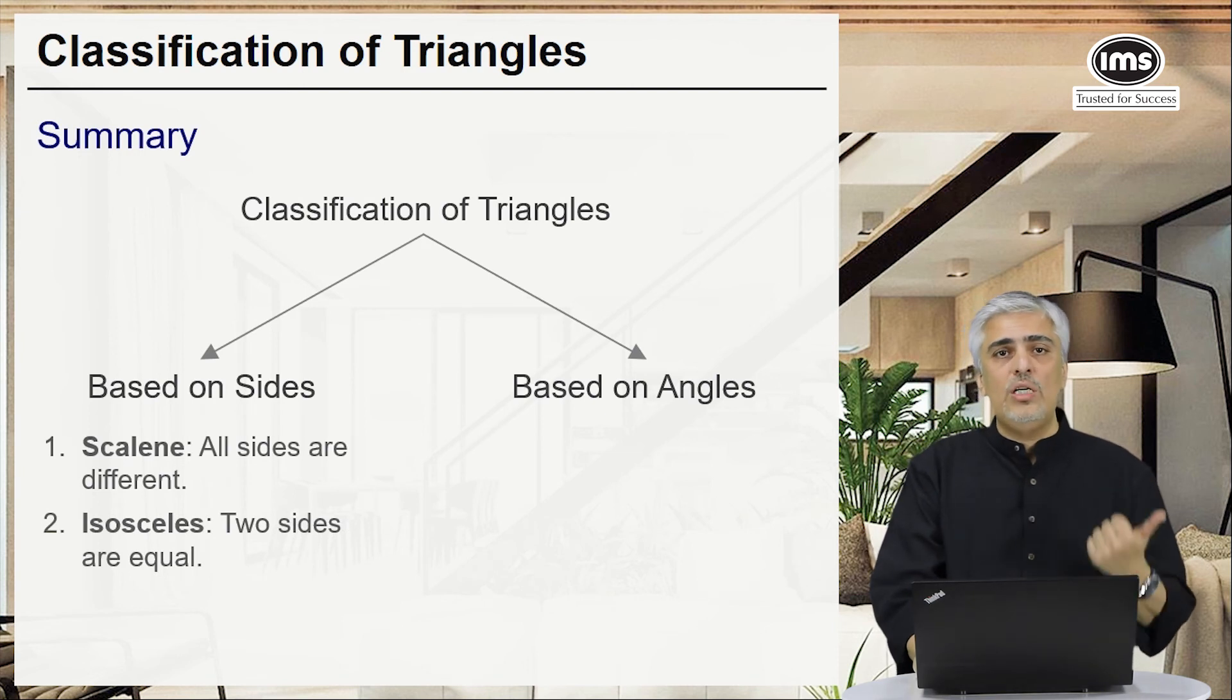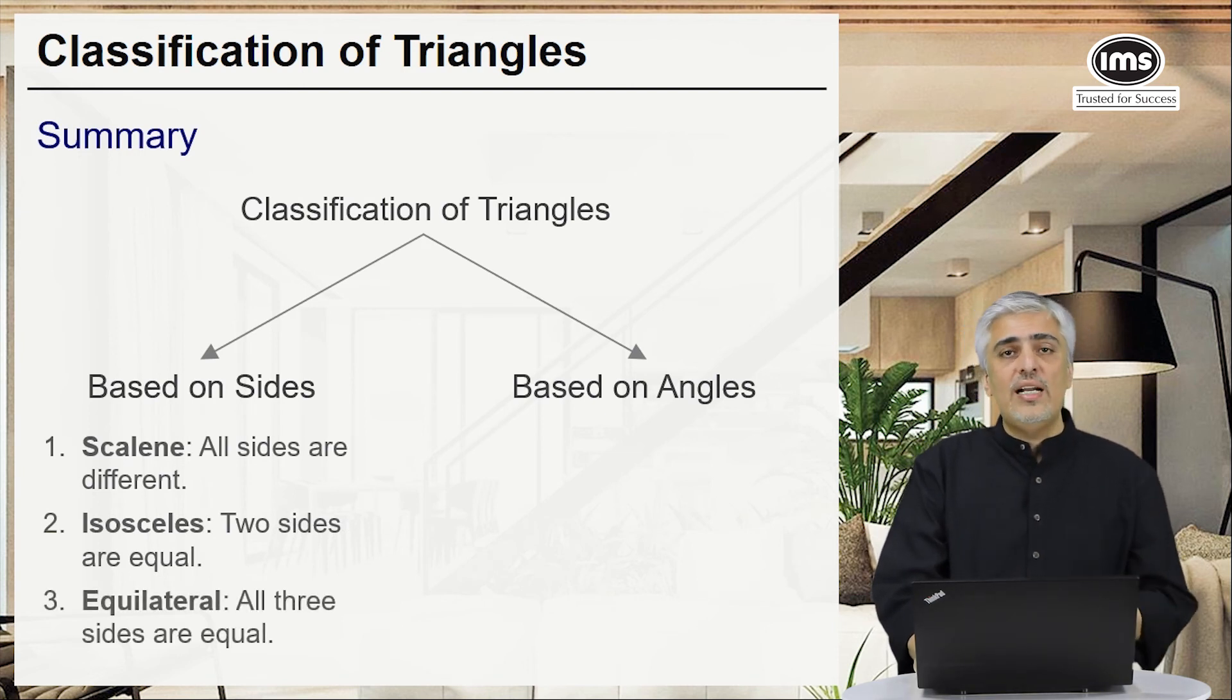Isosceles triangle: two sides equal, two angles equal. Equilateral triangle: all three sides equal, all angles 60.